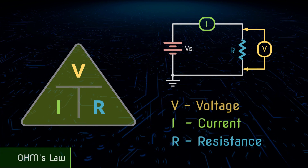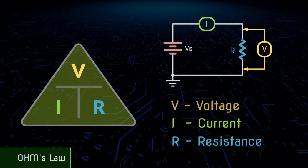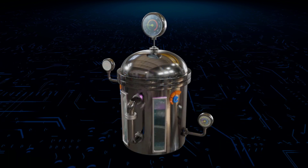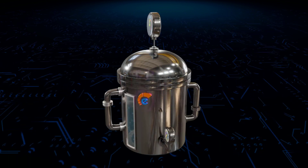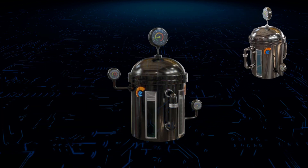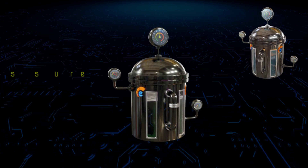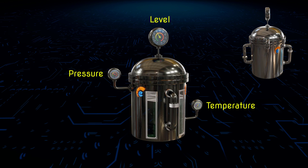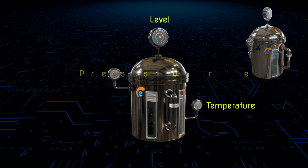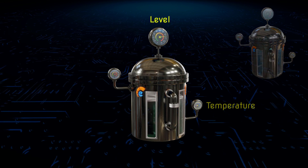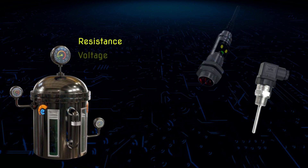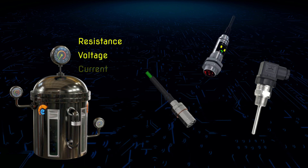In real-world applications, most environment parameters can be converted into electrical parameters using specific sensors. The output of the sensors can be resistance, voltage, or current, depending on the specification of those sensors.